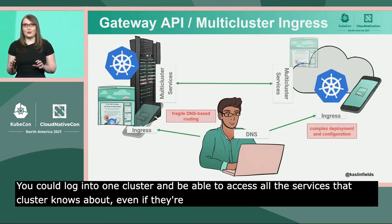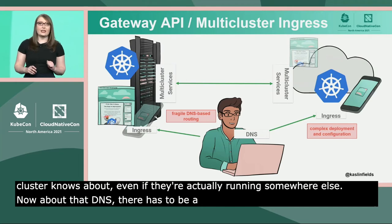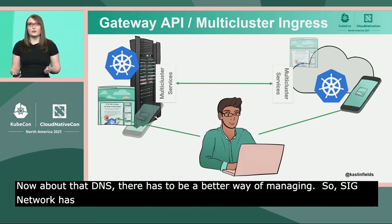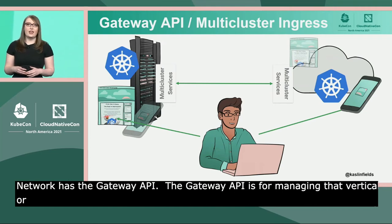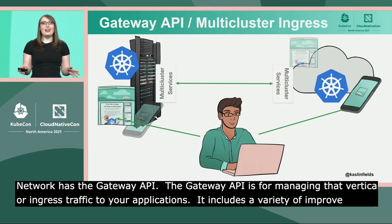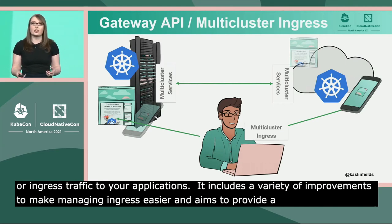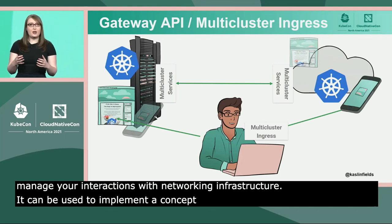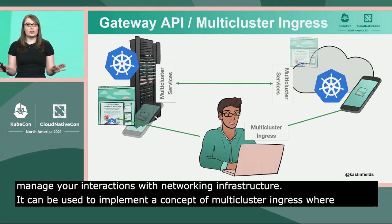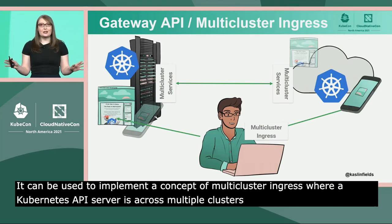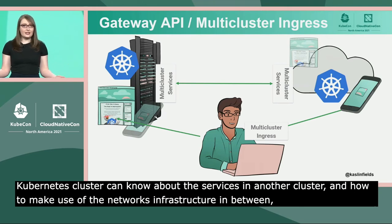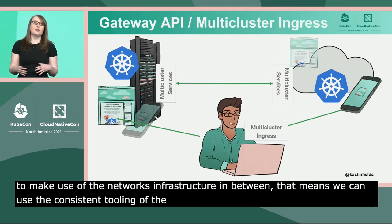Now, about that DNS — there has to be a better way to manage incoming traffic for our applications than combining DNS with the Kubernetes ingress object. So SIG Network has been hard at work on the Gateway API, which I commonly hear referred to as Kubernetes ingress v2. The Gateway API is a new implementation of Kubernetes capabilities for managing that vertical or ingress traffic to your applications. It includes a variety of improvements to make managing ingress easier and aims to provide a consistent way to manage your Kubernetes cluster's interactions with networking infrastructure. Gateway API can be used to implement multi-cluster ingress, where a centralized Kubernetes API server is used to deploy ingress controls across multiple clusters — meaning we can use the consistent tooling of the Gateway API to manage ingress for all of our apps, even across Kubernetes clusters.